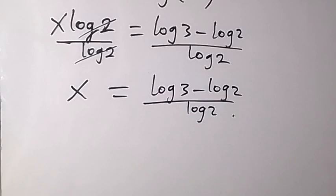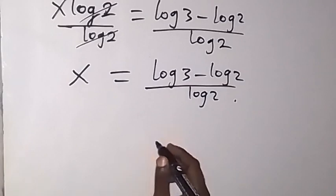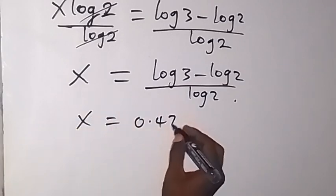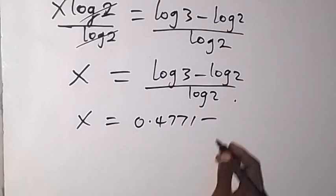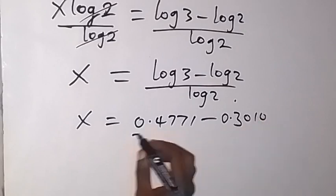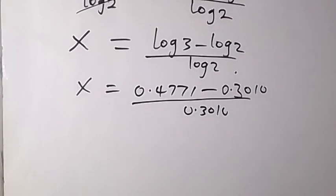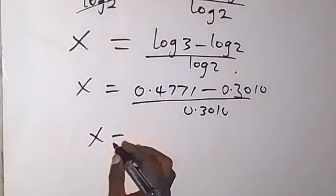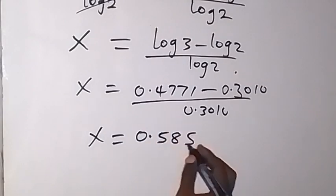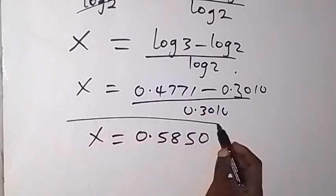And we can simplify this. The value of log 3 is 0.4771. Then value of log 2 is 0.3010. Then divide by 0.3010. So when we simplify this, we are going to get x equals 0.5850. So we subtract and we divide. We get this value of x.